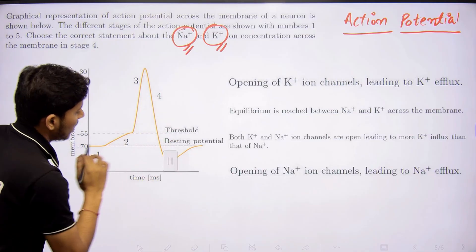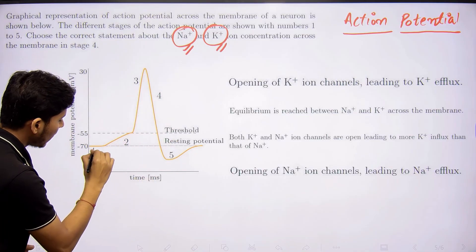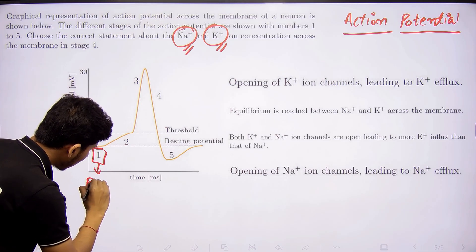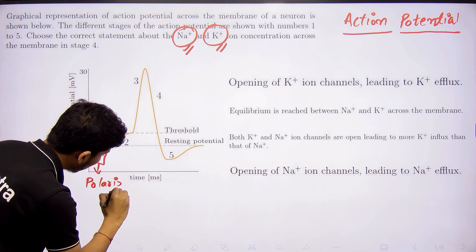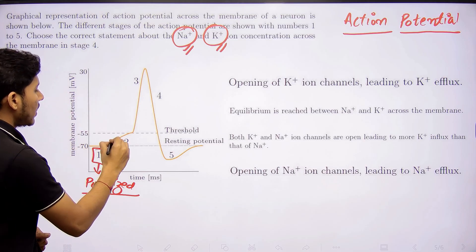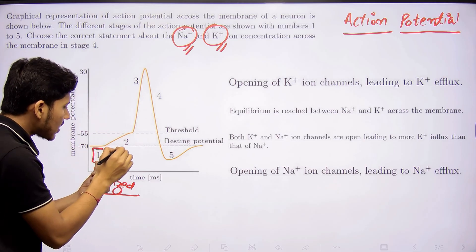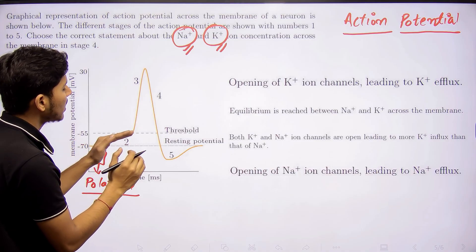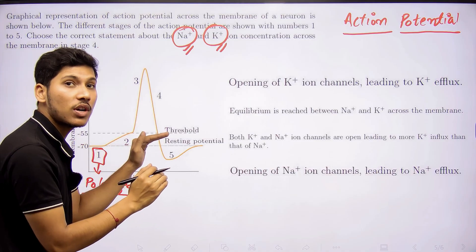This first one is a normal state which is also known as polarized state. This second step is the condition when the normal state is getting slowly towards the production of action potential. It is not specifically given any name, but yes, this is also one of the steps.